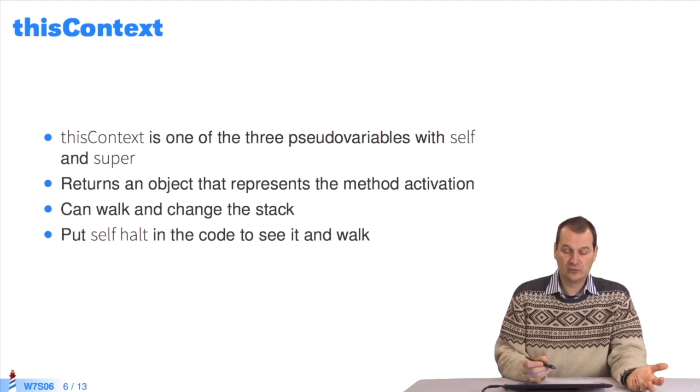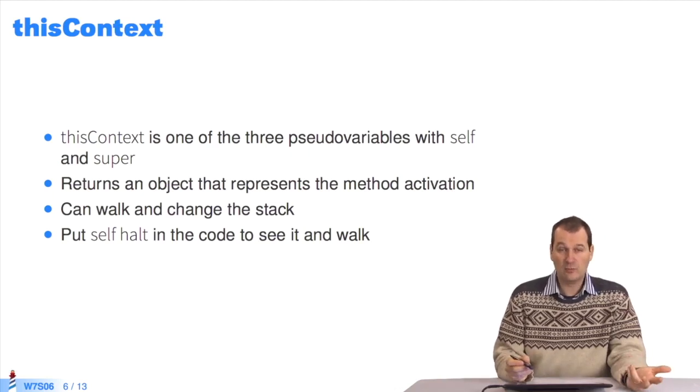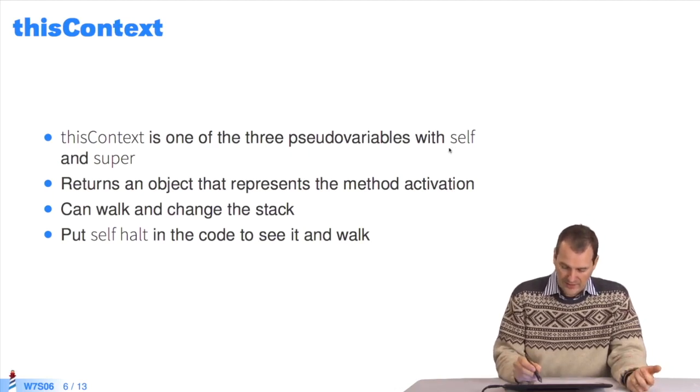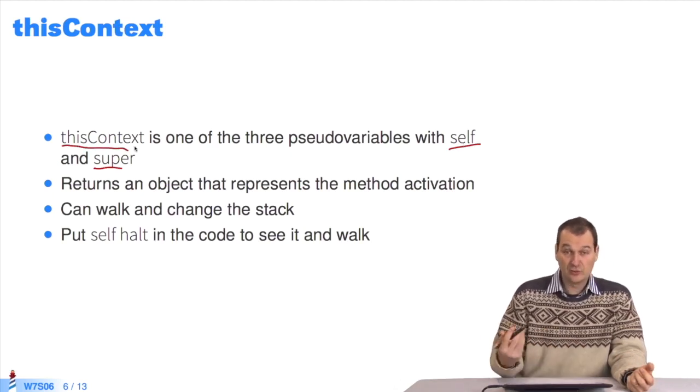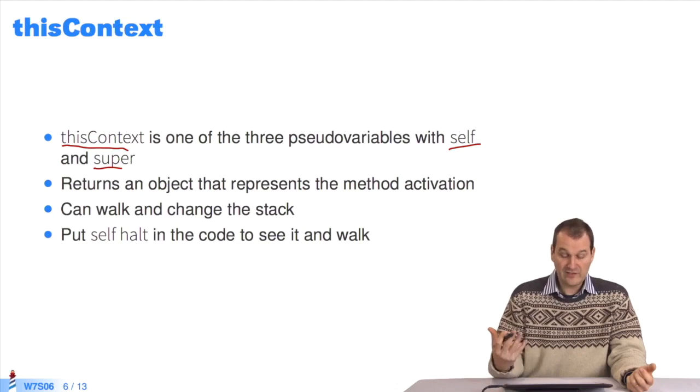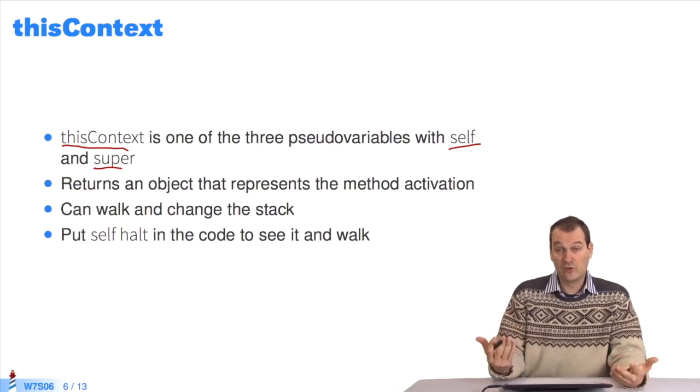To explain how this works, we can look at the variable called thisContext, one of Pharo's three pseudo variables. These are self, super, and thisContext. When you ask for this context's value, it returns the execution stack. That's what you see when you open the debugger. The execution stack is displayed based on thisContext.